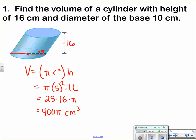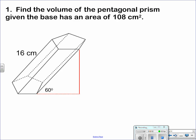Next example. Find the volume of the pentagonal prism given the base has an area of 108 cm². We need to find the height because our volume is going to be area of the base times our height. Well, we know the area of the base is 108. Now, I need to find the height, and that's a little bit of work.